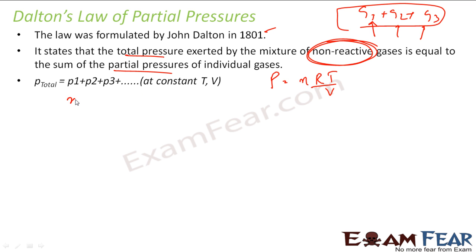So P1 will be n1 RT by V. P2 will be n2 RT by V. P3 will be n3 RT by V, like that. So if you add this, you take n1 plus n2 plus n3 like this, dot dot dot. You take RT by V common, you get something like this. So P total will be sum of all the moles into RT by V.